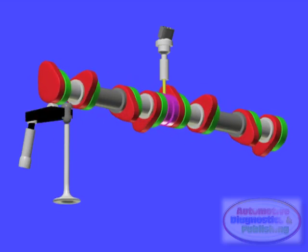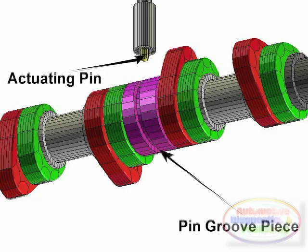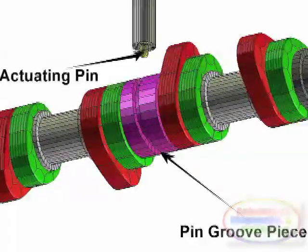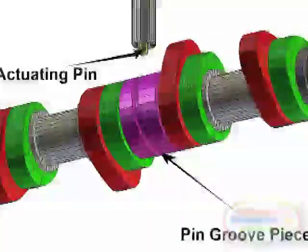This is similar to BMW's Valvetronic system that uses an electric motor, and is discussed elsewhere in this series. But the Camtronic is a two-stage system, rather than continuously variable.